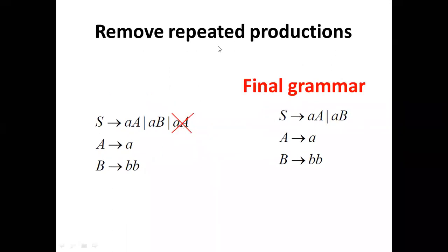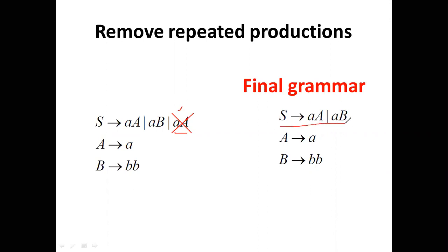In this slide, S to small-a capital-A appears twice, so we remove one occurrence. After removing the duplicate S to small-a capital-A, we keep S to small-a capital-A and S to small-a capital-B, along with all other productions in the same form. That is our final grammar, where all unit productions of the form A to B have been removed.